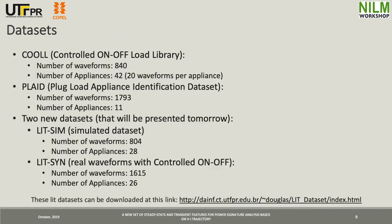In our tests, we used four different datasets. First, the COOLL dataset with 804 waveforms and 42 appliances. The second, the plug load appliance identification dataset with almost 2,000 waveforms and 11 appliances, which we named PLAID. We also have results with two new datasets from our research group: the first is a simulated dataset with 28 appliances, and the second with 26 appliances containing real waveforms.